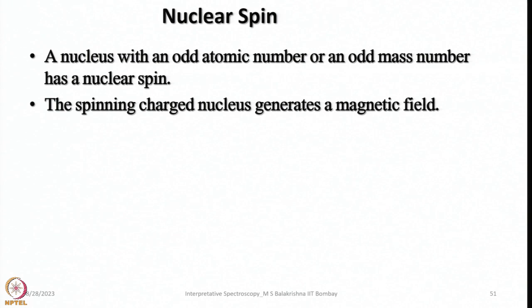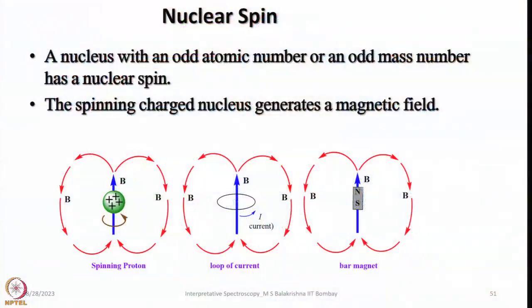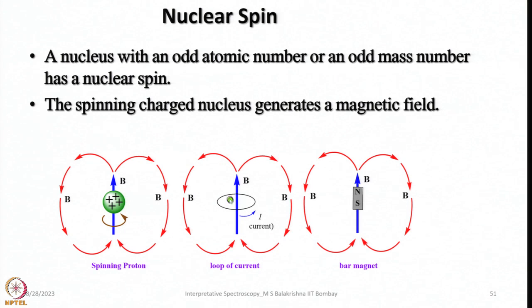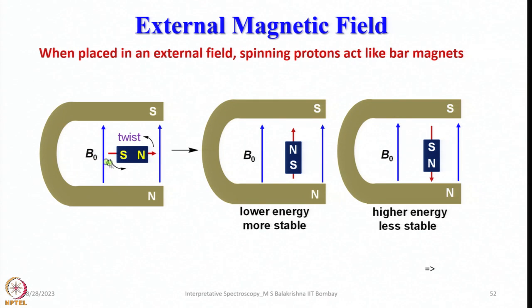A nucleus with an odd atomic number and odd mass number has a nonzero nuclear spin. The spinning charged nucleus generates a magnetic field; any charged species generates a magnetic field. Under the influence of an external magnetic field, the nucleus rotates about it, generating a loop of current and behaving like a tiny bar magnet. In the absence of the field all orientations are possible; when the field B₀ is applied, nuclei align with it (low energy, more stable, +1/2) or oppose it (high energy, less stable, −1/2). Let me stop here and continue more discussion on NMR in my next class.